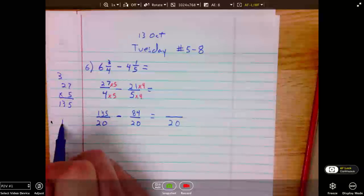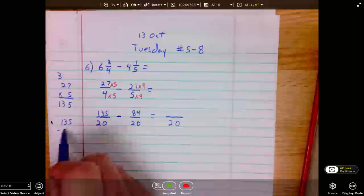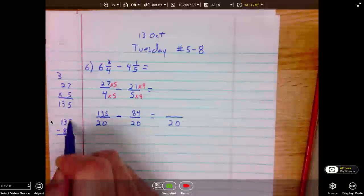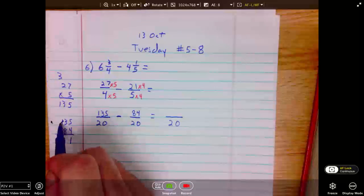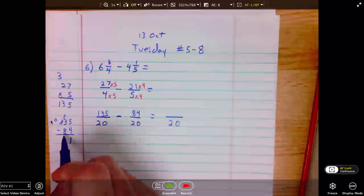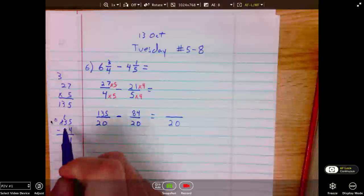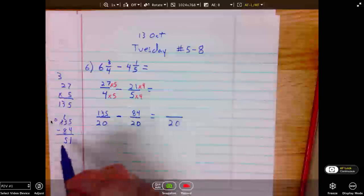Back to my scratch paper. 5 minus 4 is 1. 3 cannot subtract from 8, so we borrow. This becomes 0. Well, 13 minus 8 is 5. 135 minus 84 is 51.